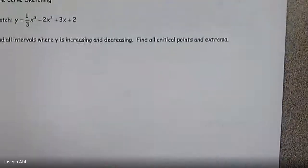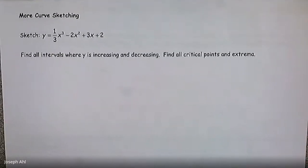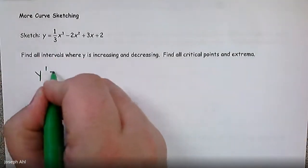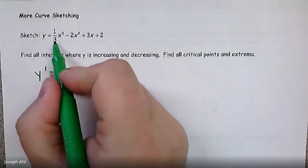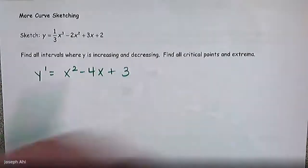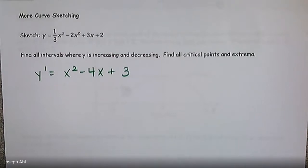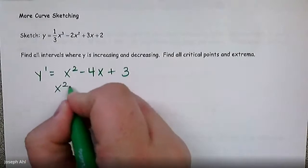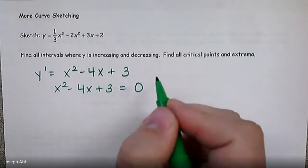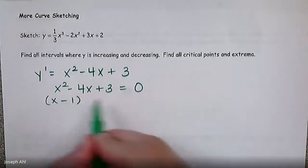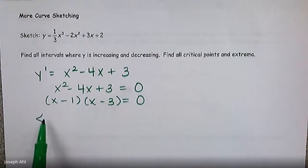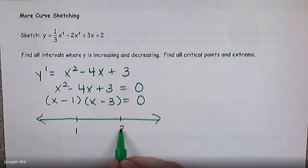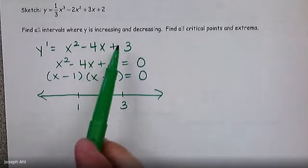Let's take a look at some curve sketching. We started our ideas of curve sketching using the first derivative test — our f prime number line — to generate where our function is increasing and decreasing and find extrema. Let's get started by finding the first derivative. Y prime, given Y equals the function up there, would be using the power rule: x squared minus 4x plus 3. Once we've generated the derivative equation, we set it equal to zero and find the critical points to partition around.